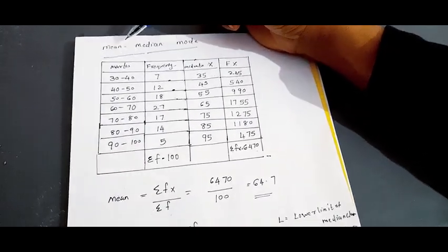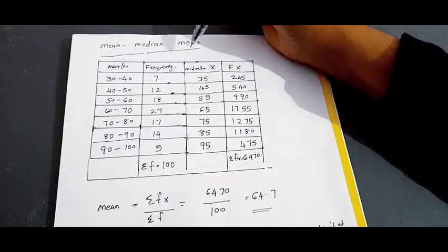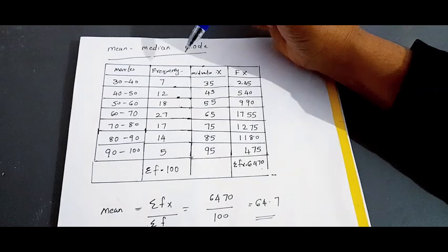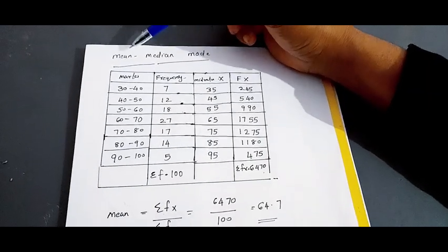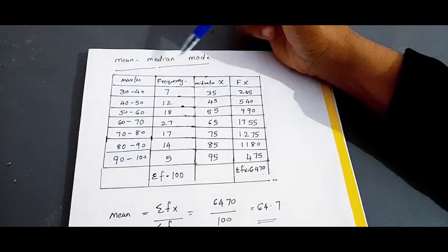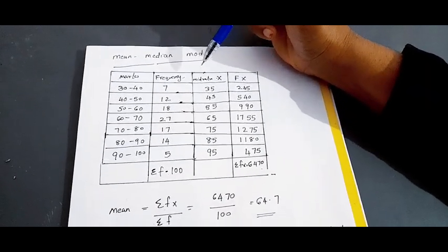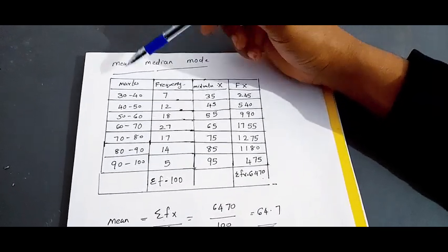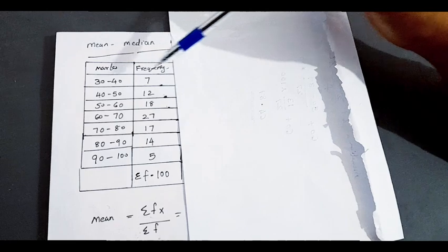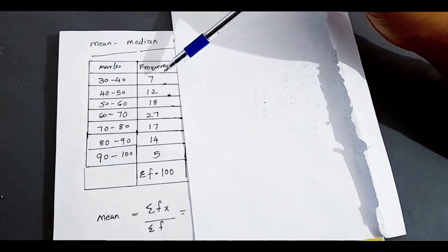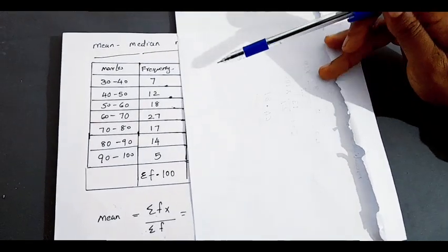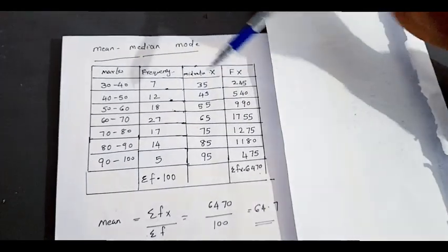This is the question for Plus 1 Economics. This covers mean, median, and mode. We have the class and frequency, and this is the mid value.